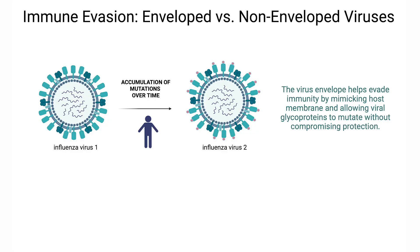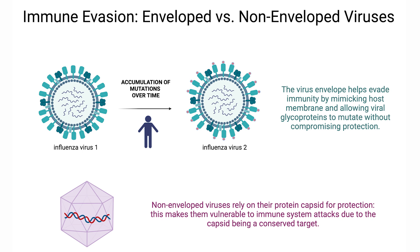Enveloped and non-enveloped viruses also differ in how they're recognized by the immune system. Enveloped viruses often have surface proteins embedded in their lipid envelope, which can frequently change or drift to evade immune detection. This is why flu vaccines need regular updates. Meanwhile, non-enveloped viruses rely on their stable protein capsid for attachment and entry, making their surface more consistent over time, which can sometimes make them easier targets for long-lasting immunity.